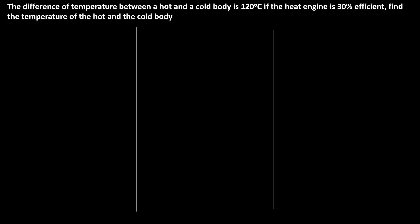This is question number 3 of your assignment paper and this is also connected to chapter 11. Again you have a heat engine. The difference of temperature between hot and cold body is 120 degree centigrade.